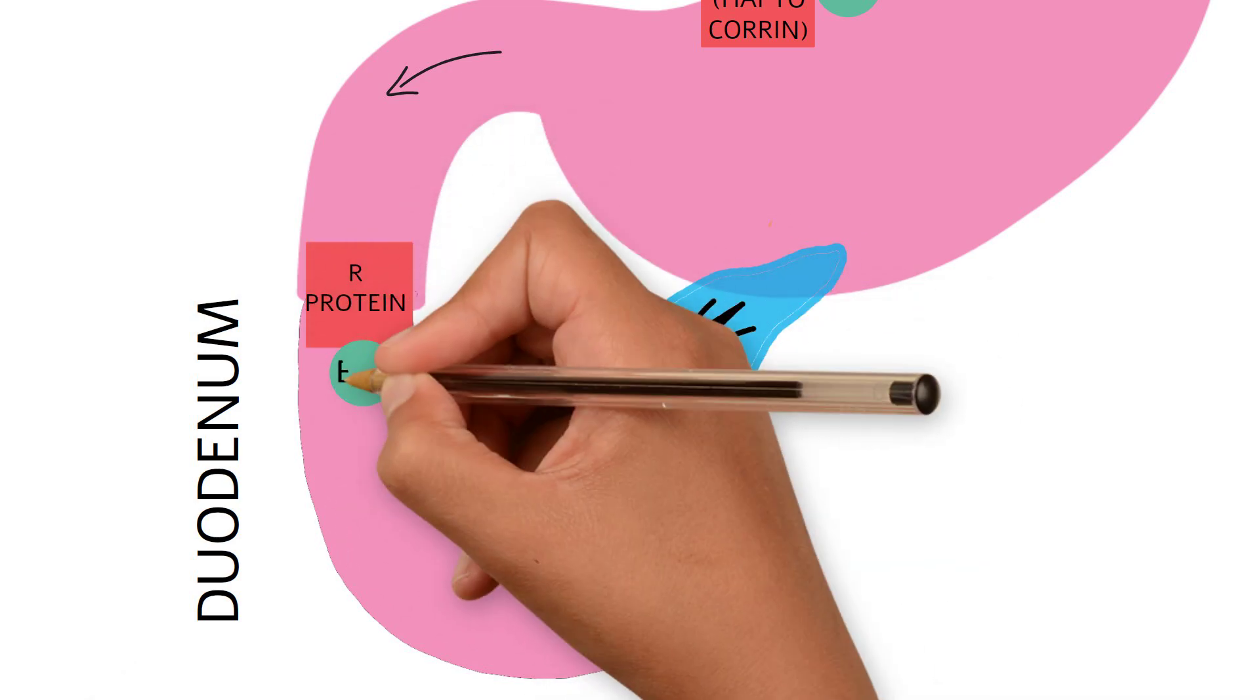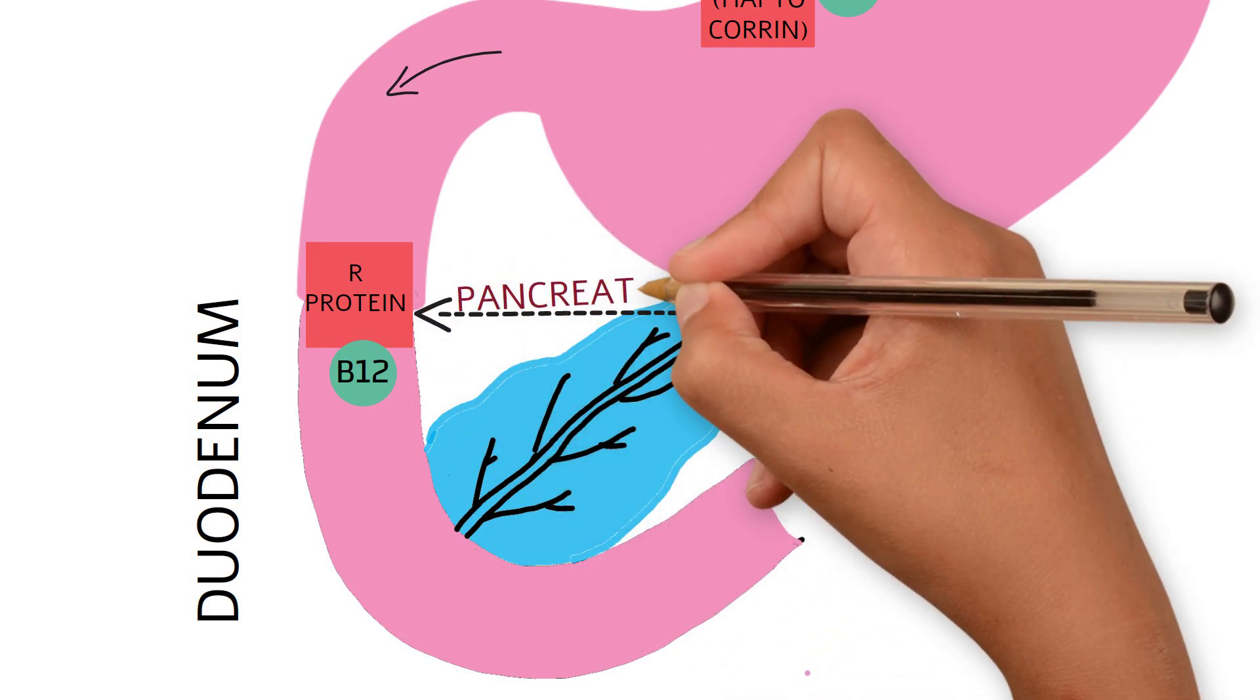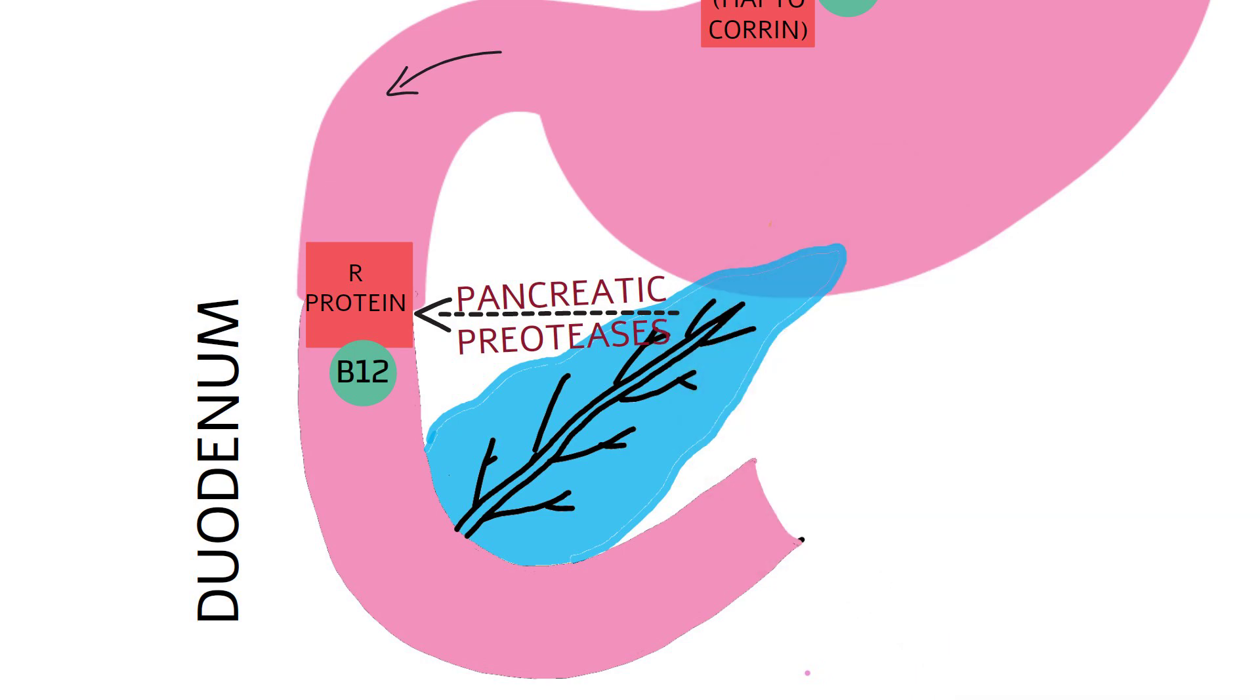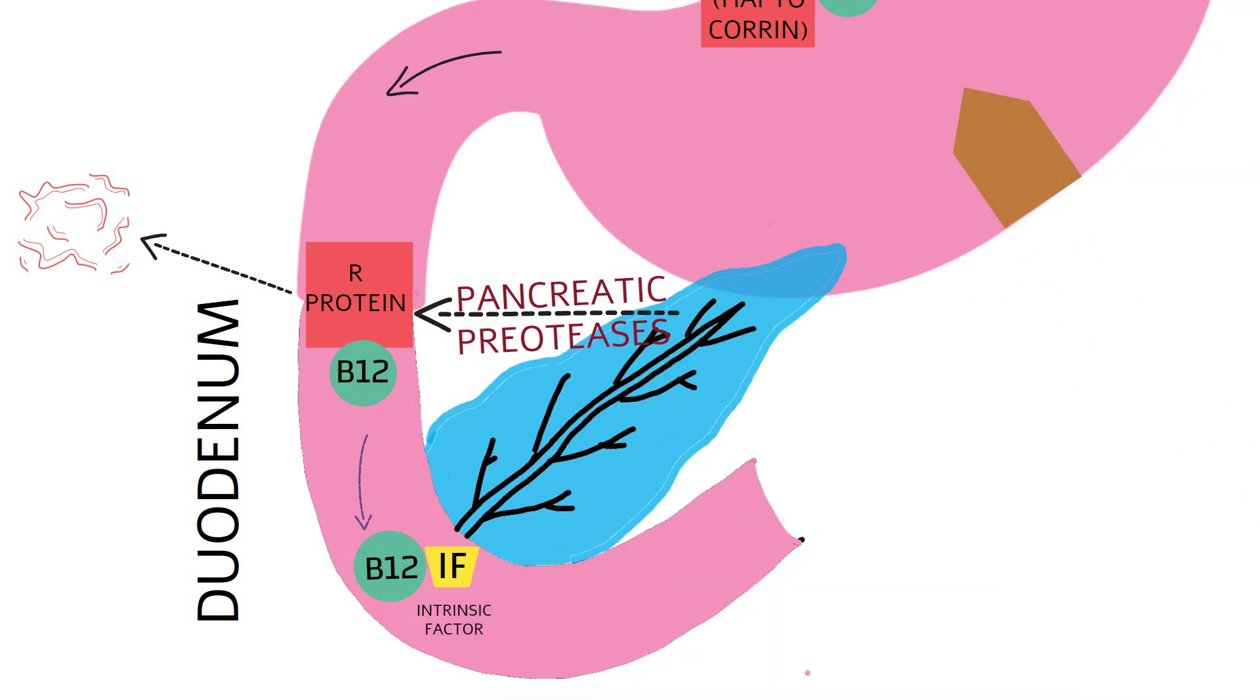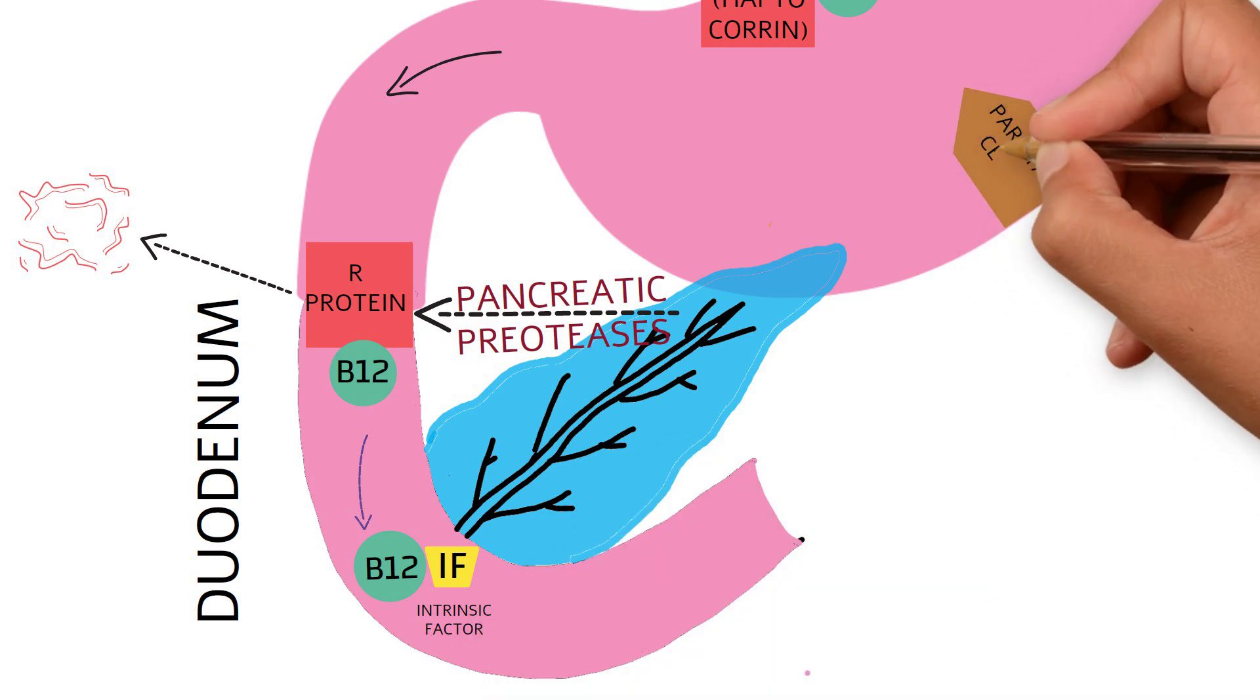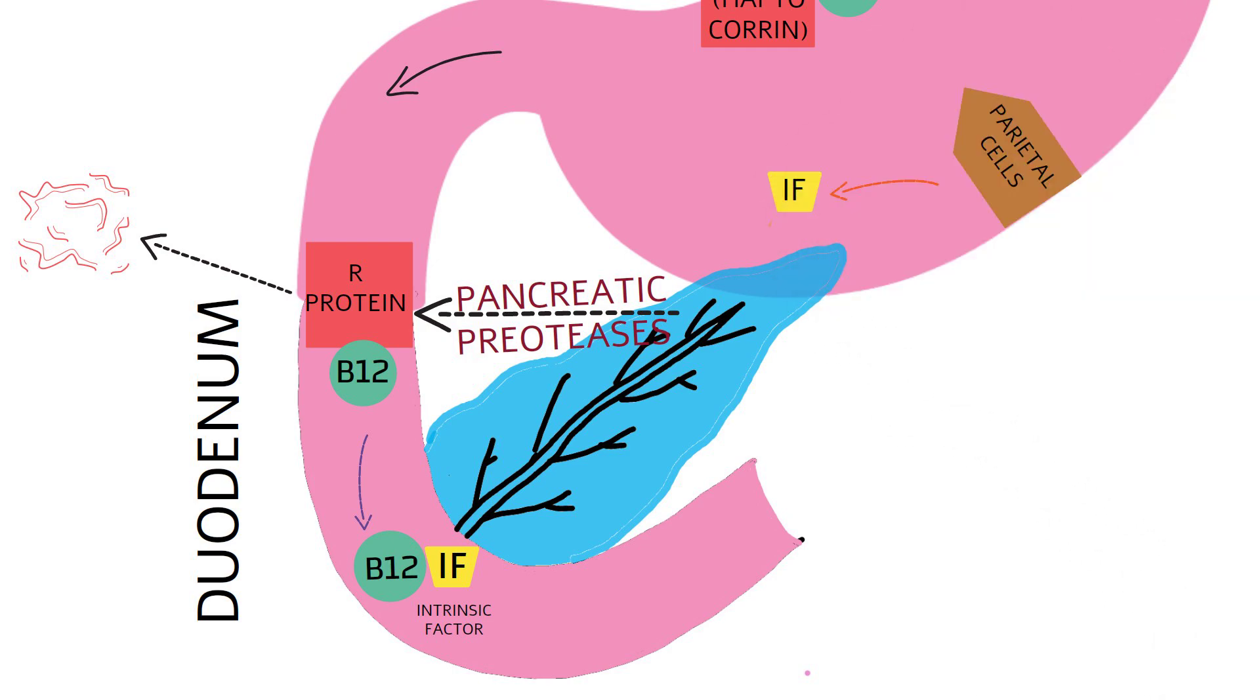In the duodenum, R protein is digested by pancreatic proteases and B12 is once again released. This B12 then binds to intrinsic factor, which is synthesized by gastric parietal cells. It travels and reaches the duodenum and binds to B12.